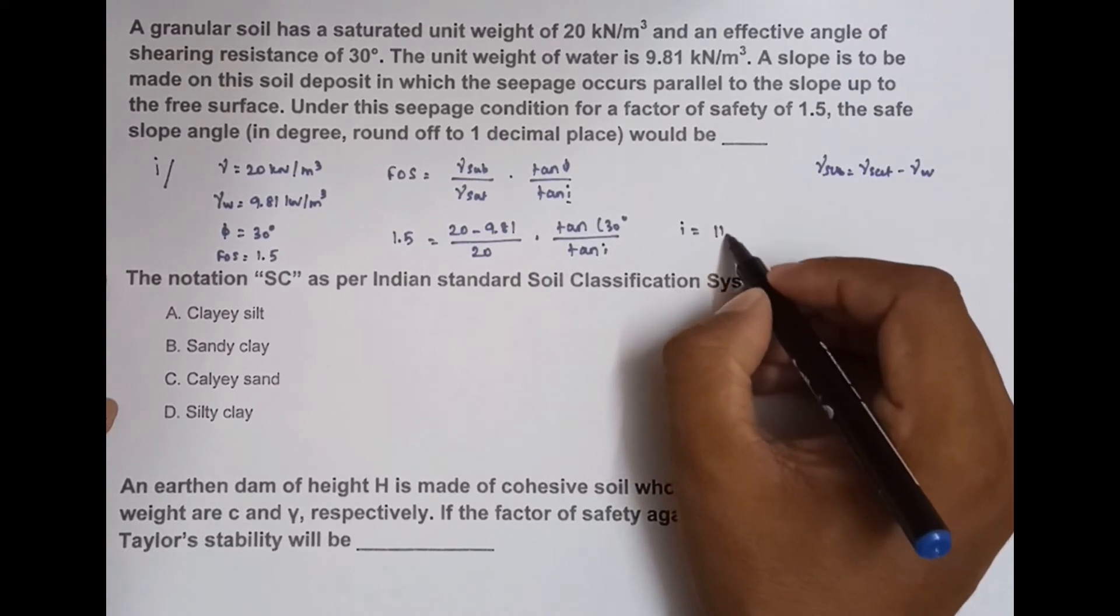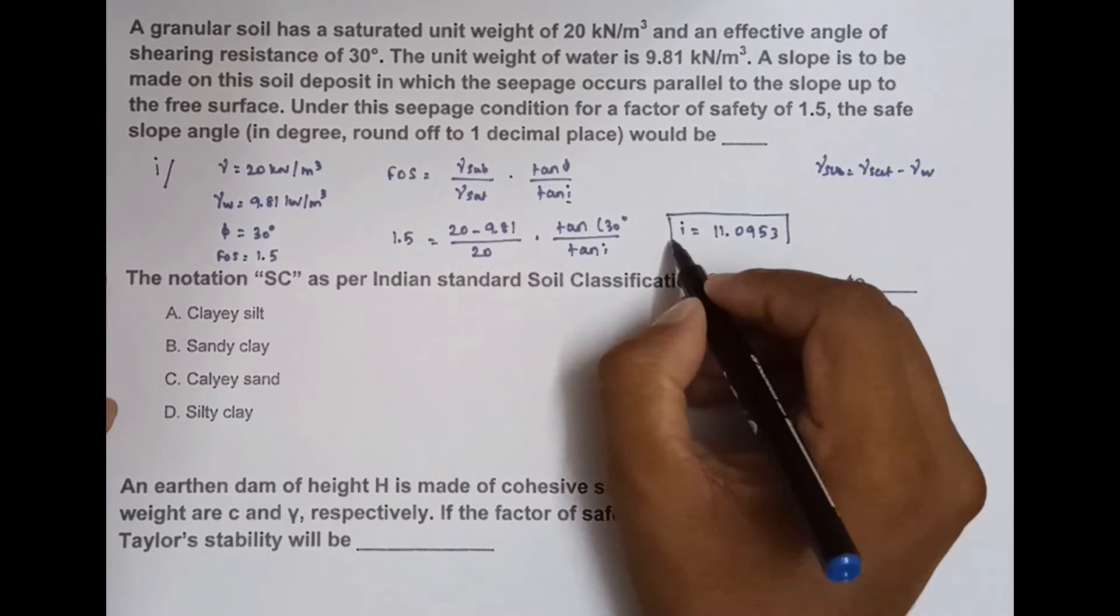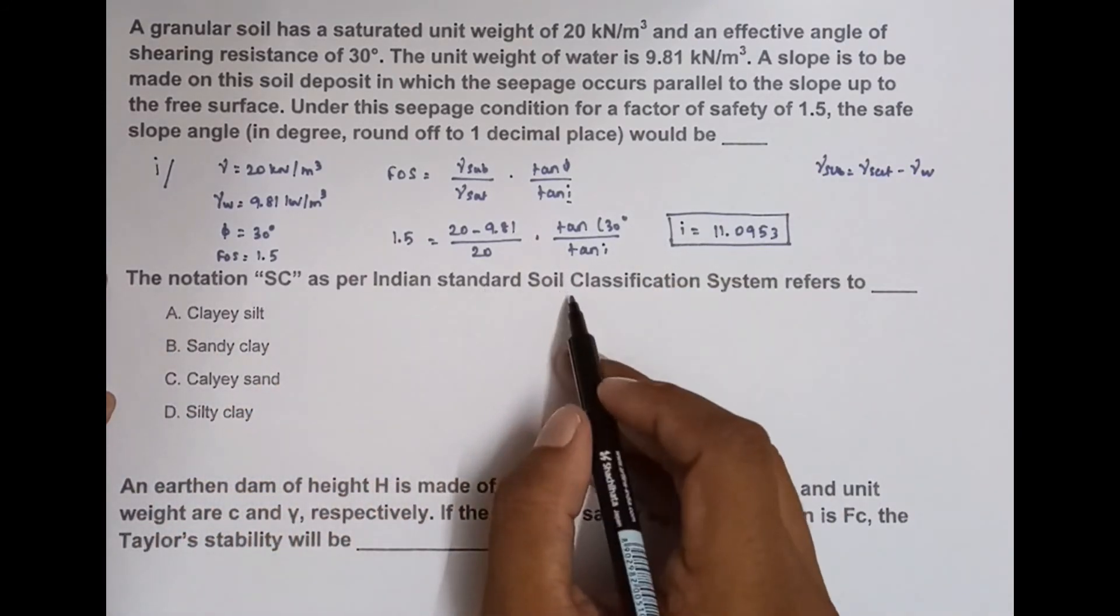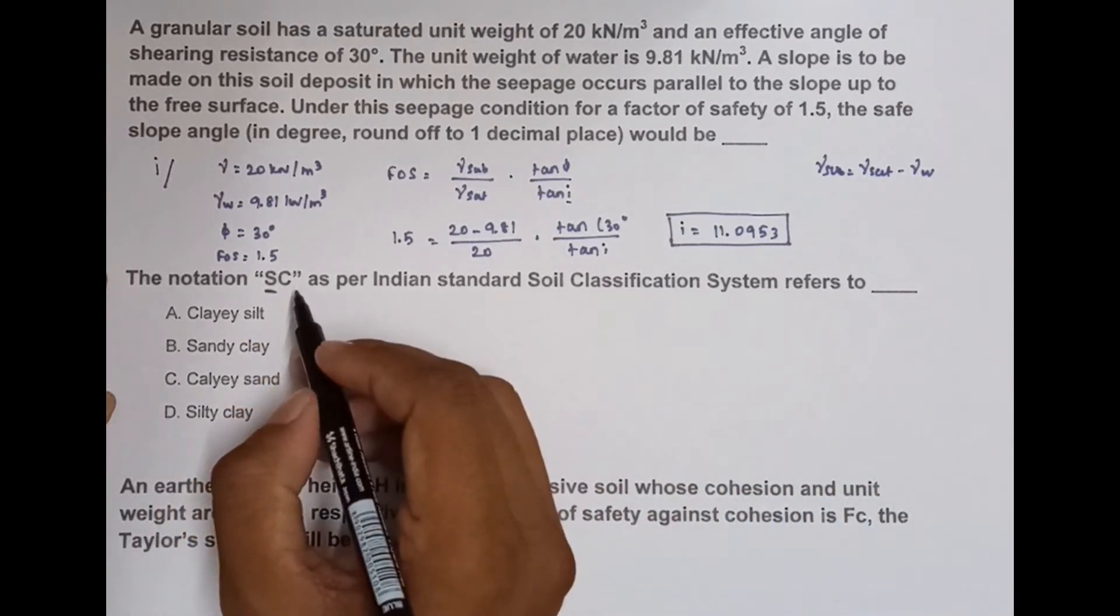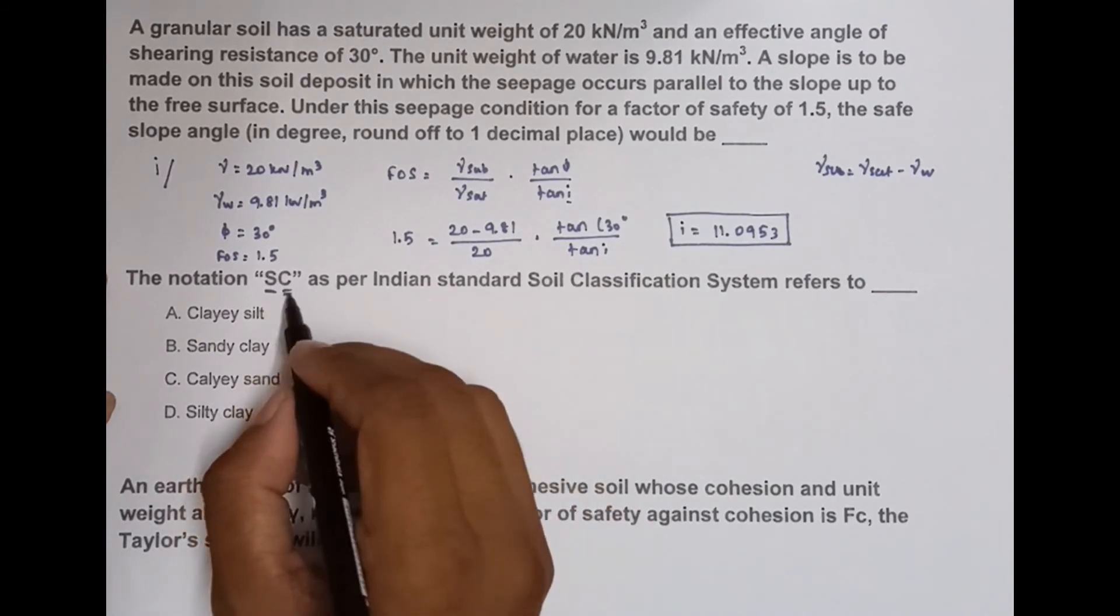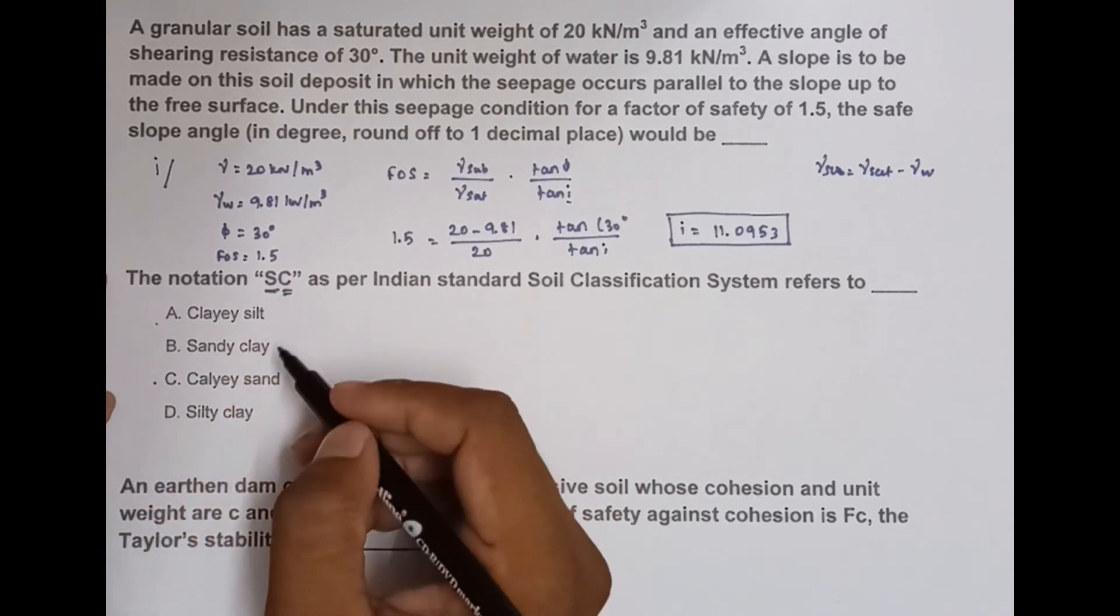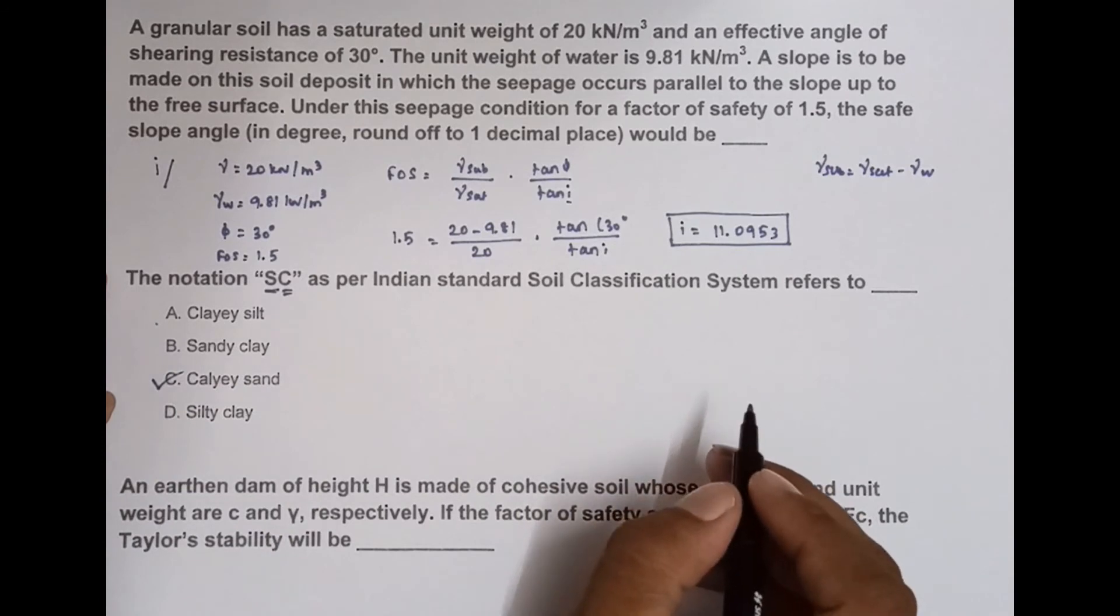Next one: The notation 'SC' as per Indian Standard Soil Classification System refers to... We know S means sand and C equals clay. So the first one is clay, then S = sand, so clayey sand. This is the correct answer.